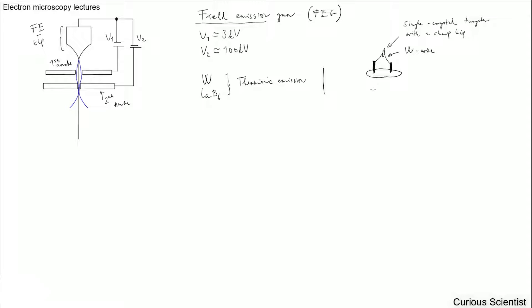And usually this sharp tip is made with electrolytical etching. And the sharpness, so the radius of this, is very small. The radius of the tip is roughly between 200 to 2,000 Å. So it's very small.